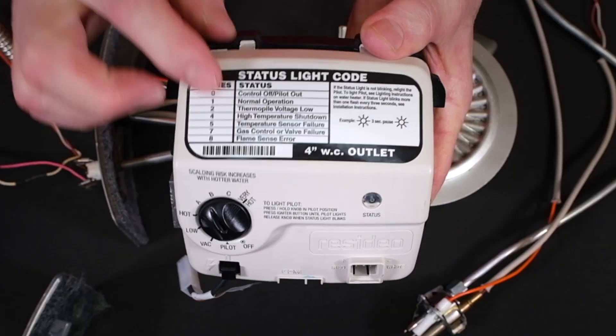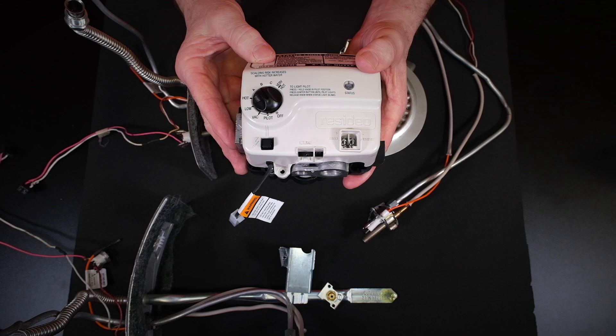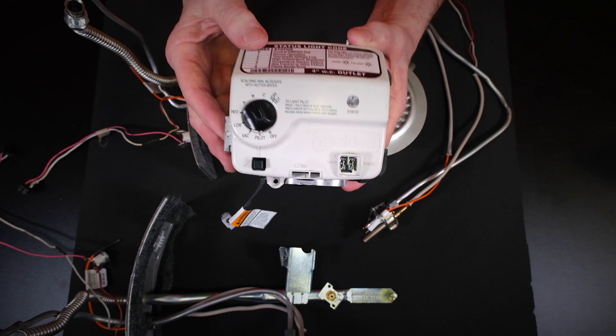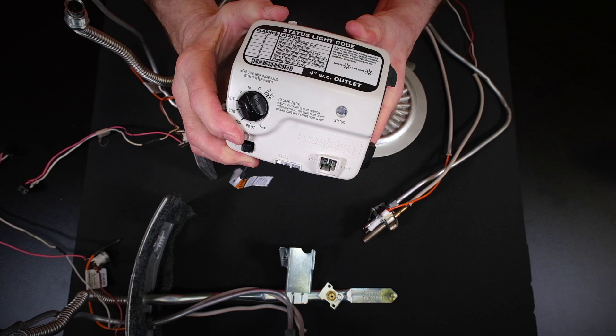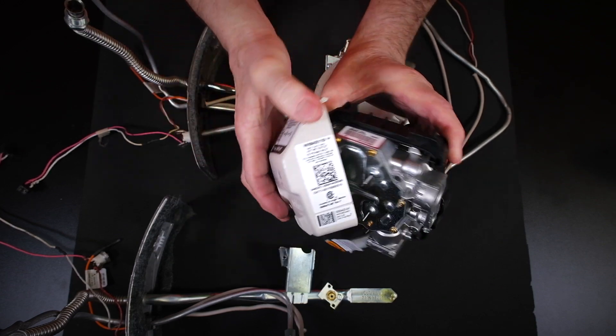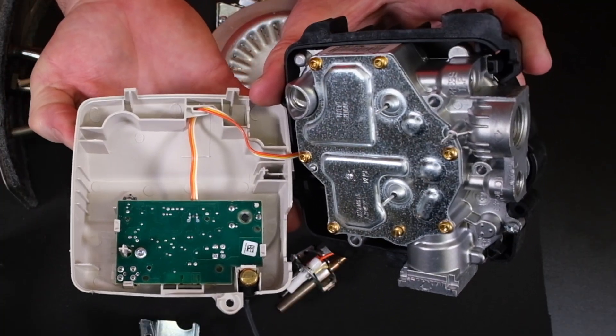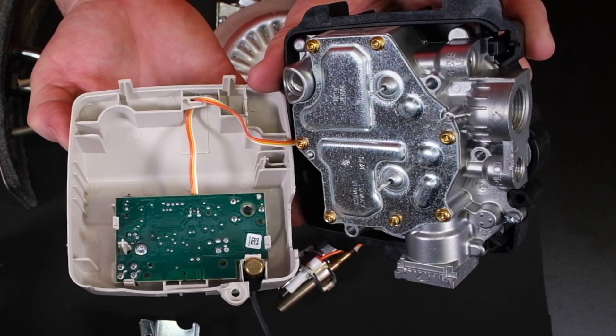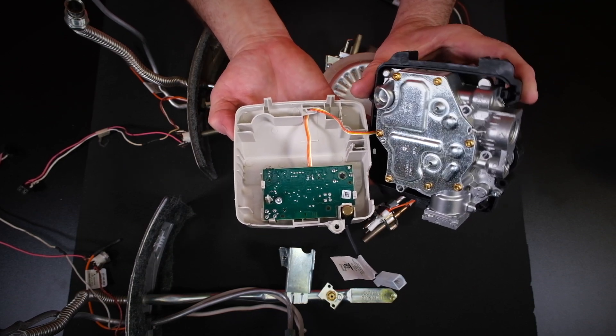If you're a homeowner, sometimes this can get confusing. One thing about this: if you ever do have to change one out, you want to make sure and drain the water heater down completely before you change this out. The reason being is this is actually a computer board in here. If you get any water inside this control valve, it's going to short-circuit and you're going to have to buy a new control valve. There is no repairing this unit once it gets wet.